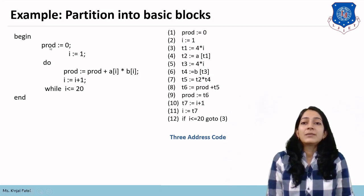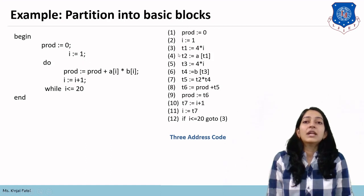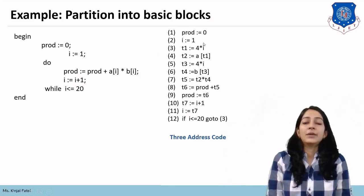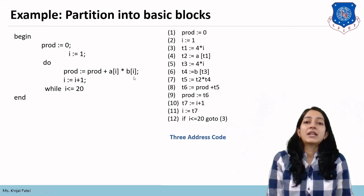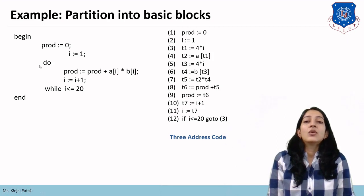The first line, production = 0, is already in three-address form, so we write it directly. Similarly, i = 1 has only one operator and two operands, so we write it directly. The loop statement production = production + a[i]*b[i] contains more than three-address form, so we need to convert it using temporary values.